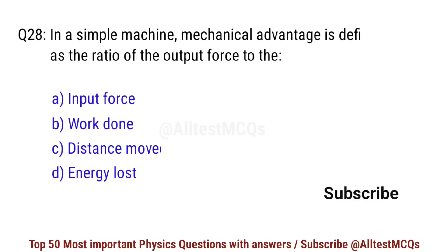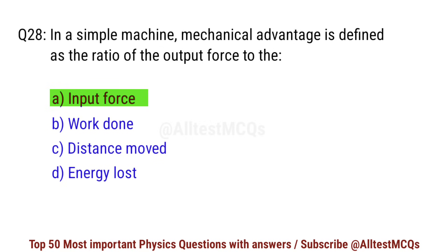Question number 28. In a simple machine, mechanical advantage is defined as the ratio of the output force to what? The right option is A. Input force.